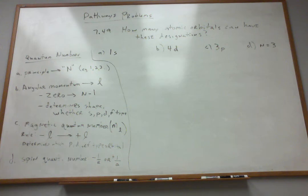Okay, let's work with Pathways Problem 7.49 from Chapter 7. We're given four different atomic orbital designations, and we want to know what quantity of different atomic orbitals can possibly have the designations that we're given.